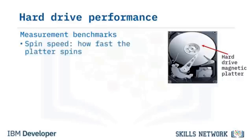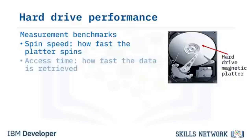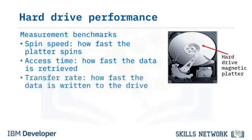Spin speed, or RPM, is how quickly the magnetic platters rotate — the faster they spin, the better the performance. The two most prevalent HDD speeds are 5,400 RPM and 7,200 RPM. Access time refers to how quickly the drive can find stored data, typically 5 to 10 milliseconds for fast drives. Transfer rate, sometimes called media rate, is the speed at which data moves to and from the disk, described in megabytes per second (MBPS).